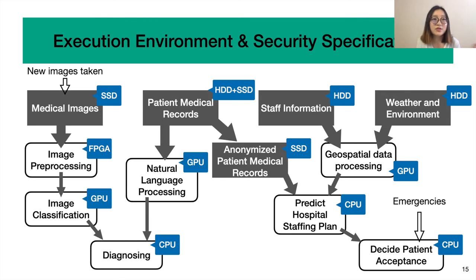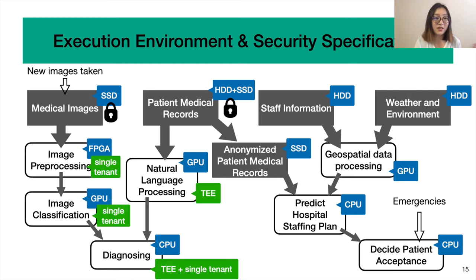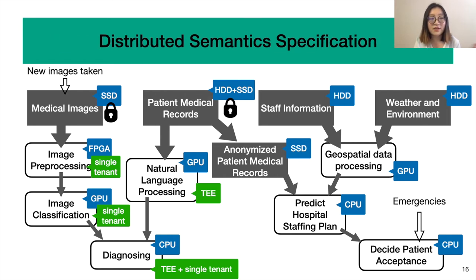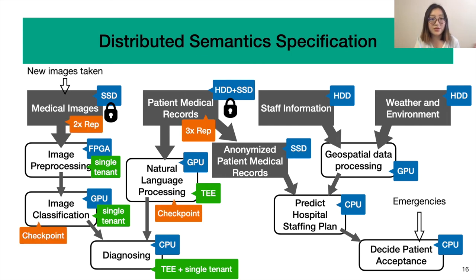Next, the IT team can specify the execution environment and security needs for each module. For example, they can say that the medical images and records need to be stored securely with privacy. They can specify that image preprocessing and classification happen in a single-tenant environment where the hardware is only occupied by this hospital. Certain other modules are executed in the trusted execution environment, or a combination of trusted execution environment and single-tenant. Finally, the IT team can specify distributed semantics, for example the degree of replication, where to checkpoint, and the level of consistency.